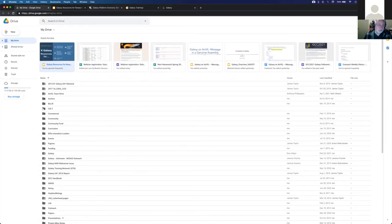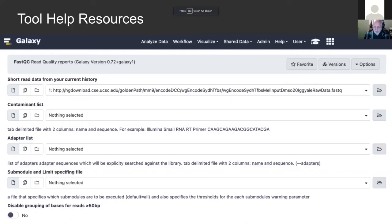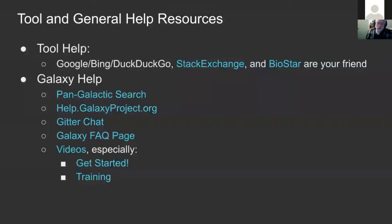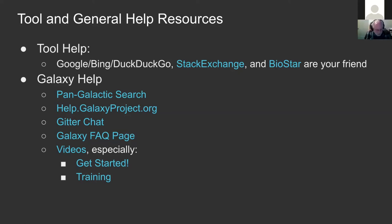Most tools like FastQC weren't written specifically for Galaxy - they are general purpose tools available outside of Galaxy, which means they have help information on the web outside of Galaxy as well. If you have a question about a tool, Google and DuckDuckGo are your friend. There are also two websites I want to highlight in particular: the Stack Exchange Bioinformatics site and Biostar, which are question-and-answer forums online where you can ask questions about bioinformatics.